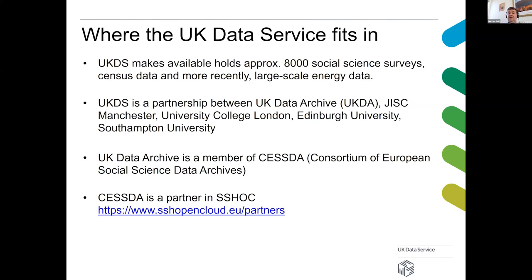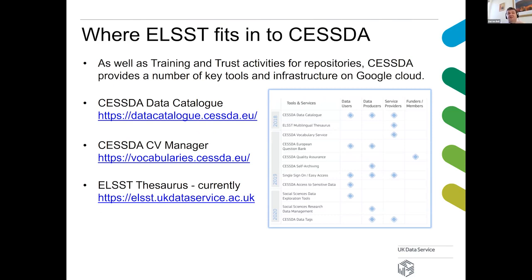ELST is a thesaurus product. ELST stands for European Language Social Sciences Thesaurus, and this is something that's been hosted traditionally and has belonged to the UK Data Archive. This year we're actually transferring the license and ownership of ELST over to CESDA, and as part of the migration of IP we're transferring some of the technology to a new platform to be hosted on Google Cloud by CESDA themselves. CESDA produces tools, training and trust, and the main tools they produce include the CESDA data catalogue, a CV manager for controlled vocabularies developed mostly by GESIS, and of course the ELST thesaurus, which will be migrating quite soon onto the CESDA platform.